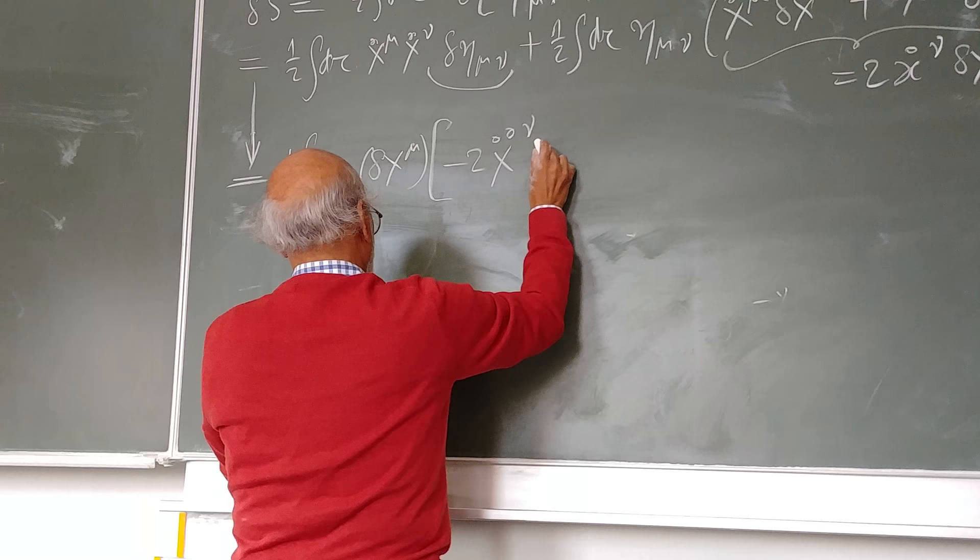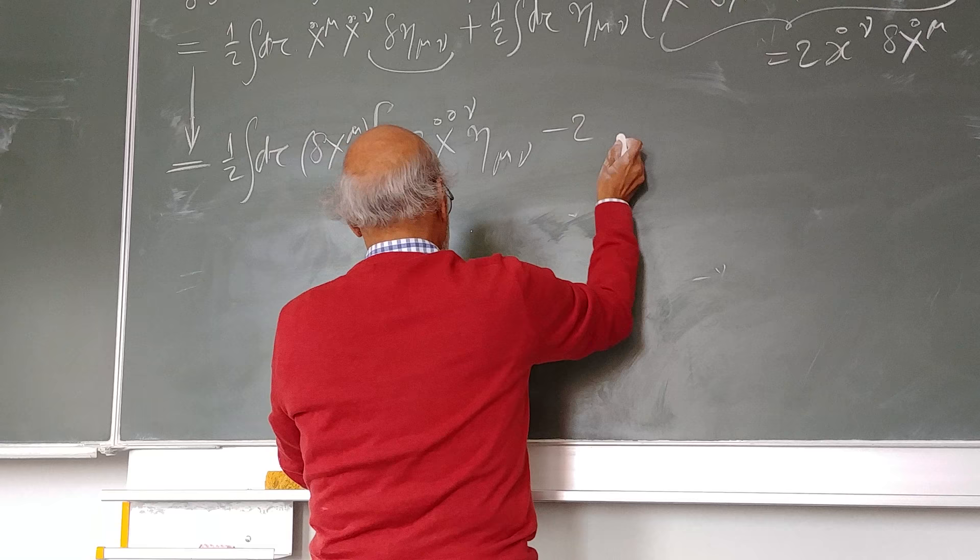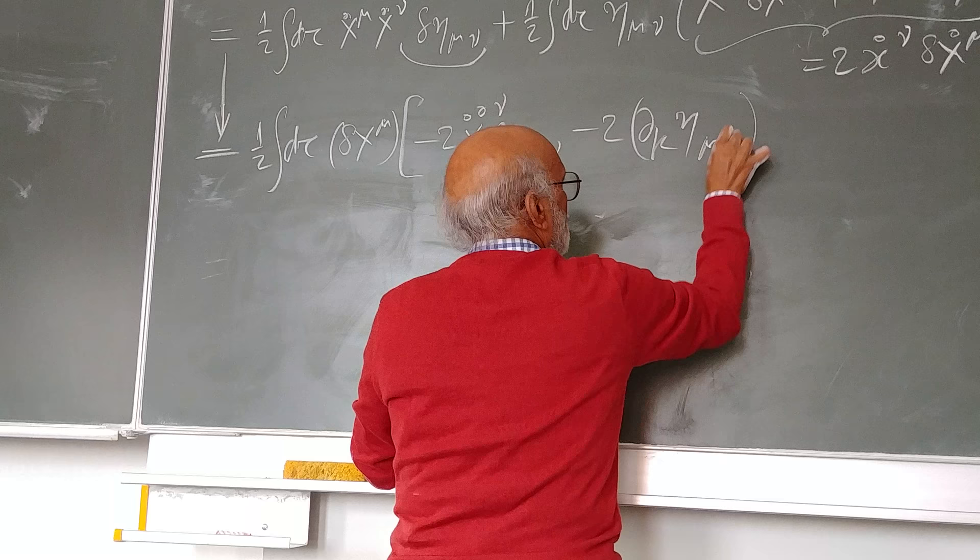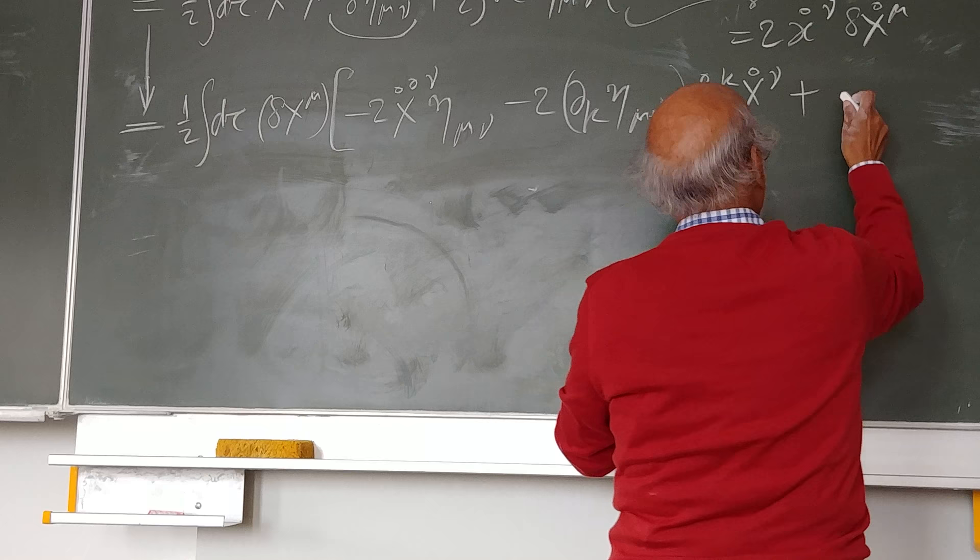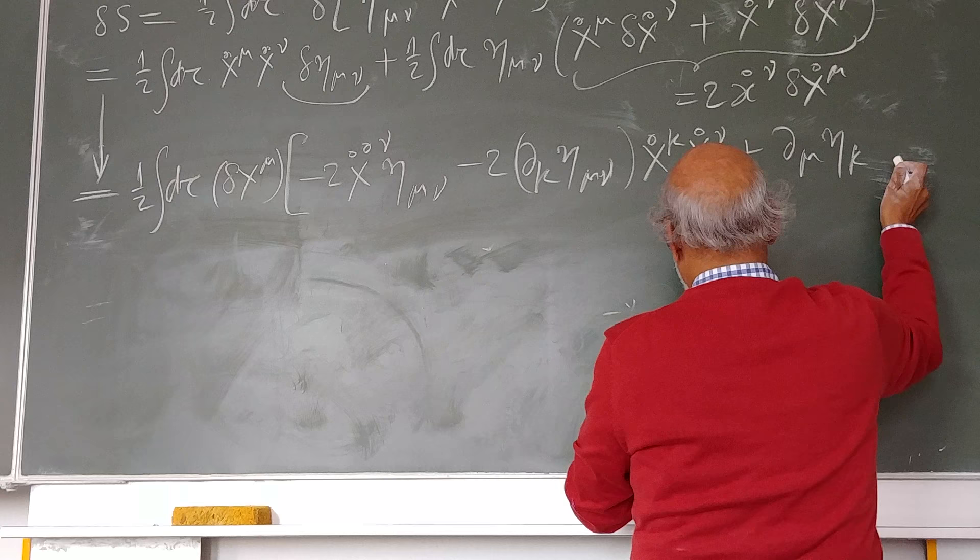There is one term with x double dot which is multiplied by eta mu nu minus twice del k of eta mu nu times x k dot x mu dot, plus del mu of eta.